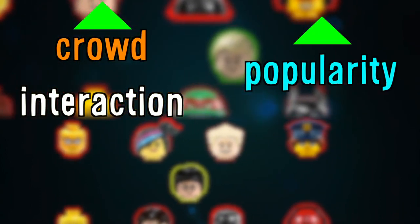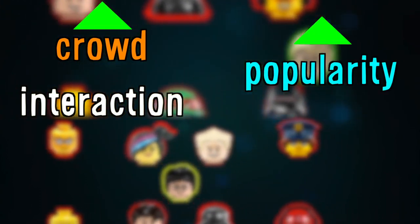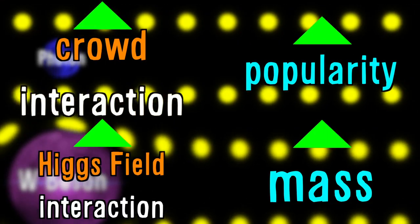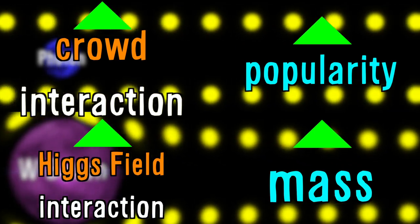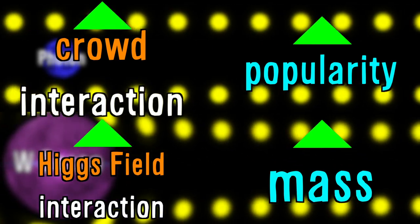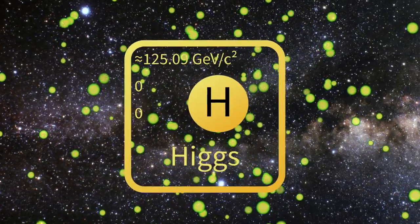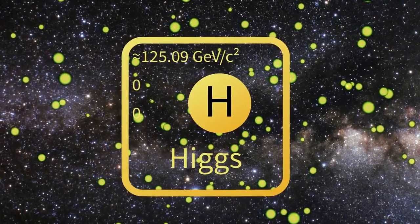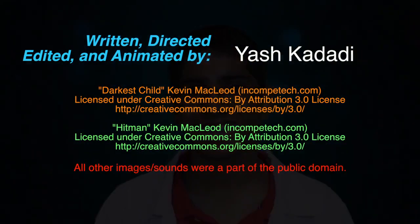Their amount of interaction with the crowd gives them their popularity. The Higgs field, like the crowd, gives mass to elementary particles based on their interaction with it. I hope this helped you understand the Higgs field better, and thanks for watching!